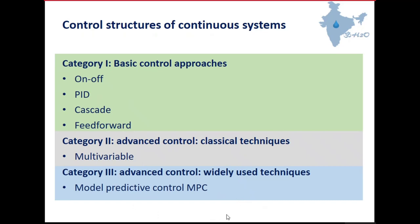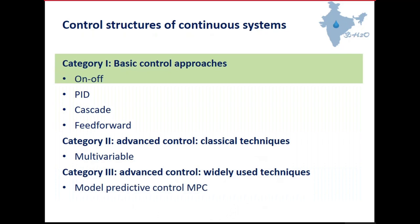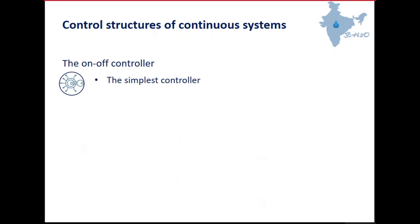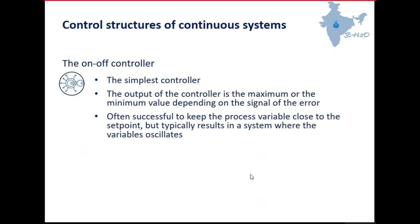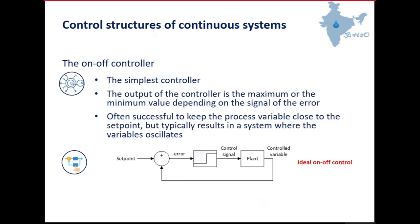Let's start with the on/off controller. The on/off controller is the simplest controller, and its output is the maximum or minimum value depending on the sign of the error. It is useful to keep the process variable close to the set point, but you can observe some oscillations in the result. In this scheme, you have your set point and controlled variable measurement, you calculate the error as the difference between the set point and the controlled variable, and depending on the sign of this error, your control signal is the maximum or minimum value applied to the plant.